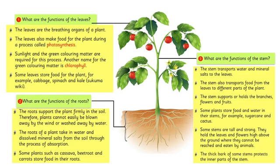The stem transports water and mineral salts to the leaves. The stem also transports food from the leaves to different parts of the plant. The stem supports or holds the branches, flowers, and fruits. Some plants store food and water in their stems, for example sugar cane and cactus.